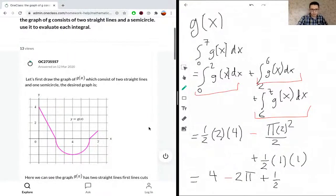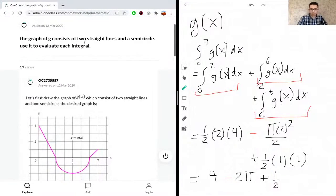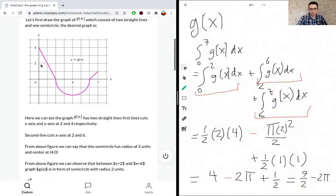So this question tells us to evaluate each integral. Here we've kind of done it, we evaluated each component of the function, but we can also tell what the full value, so what the full integral between 0 to 7 is. We have 4 minus 2 pi plus a half. So 4 plus a half is, if we can put that into one fraction that would give us 4 times 2 which is 8 plus 1, that would give us 9 halves and then minus 2 pi.